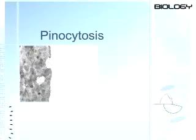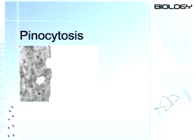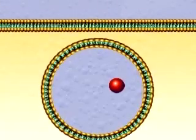Fluids that the cell wants to take in enter by a process called pinocytosis. In this type of endocytosis, the cell membrane sinks in, the material sinks inward, and the membrane pinches off. The cell uses energy for this movement.